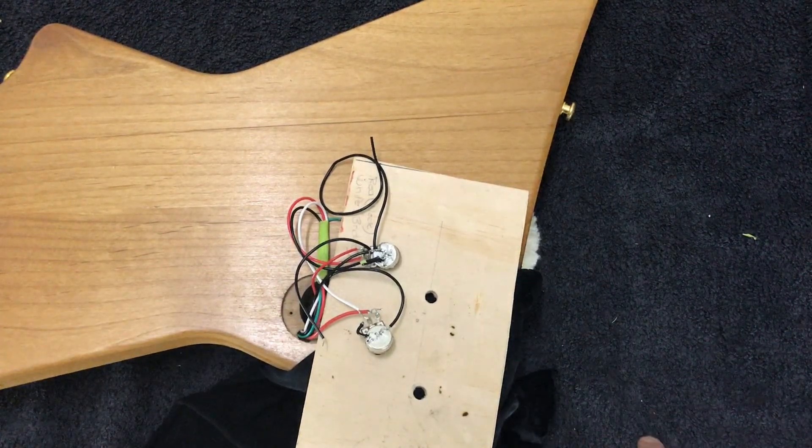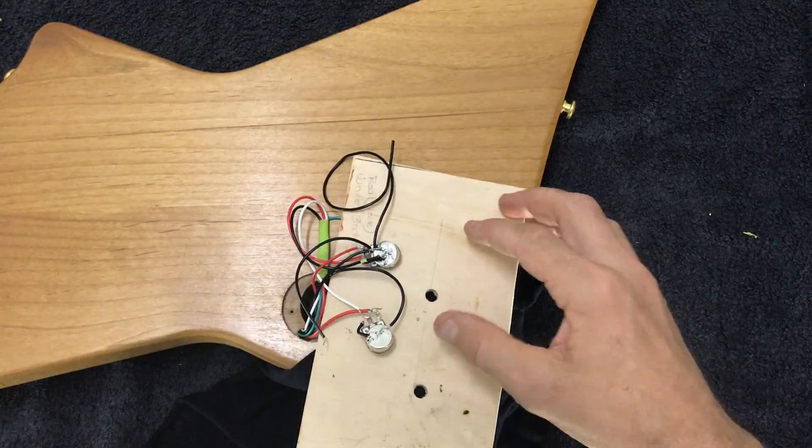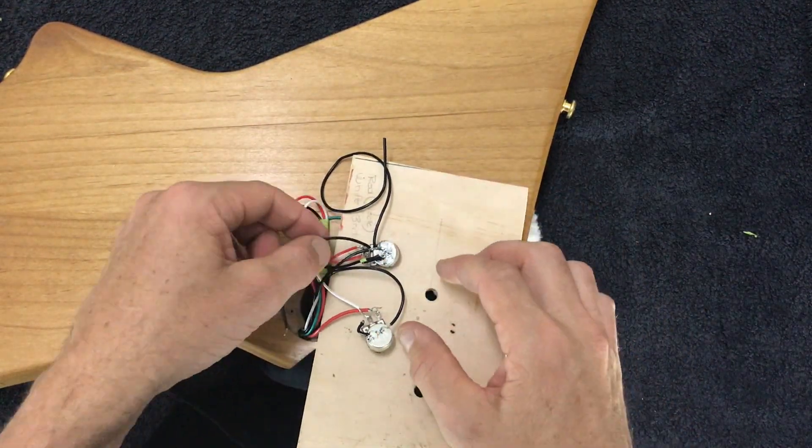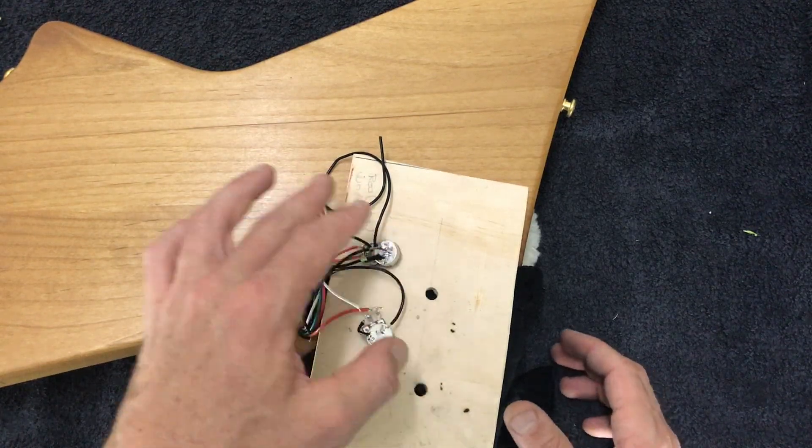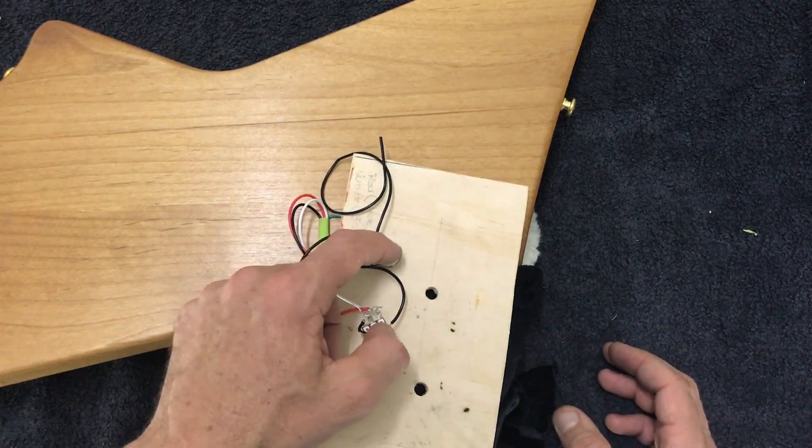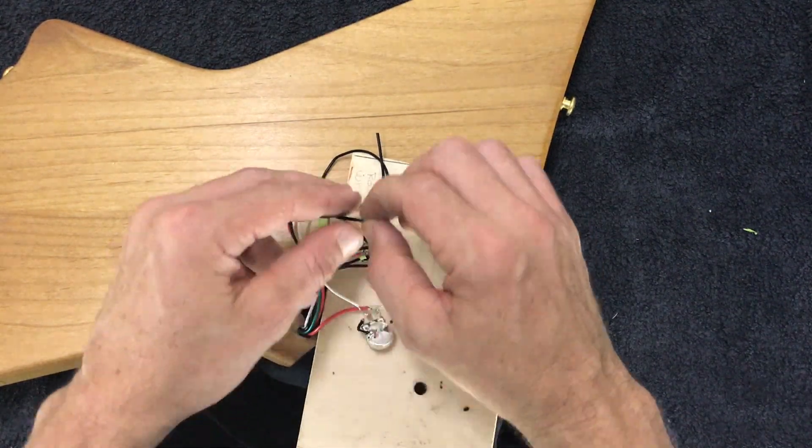Unfortunately the video cut out there, but what I've since done - I've connected the ground wires from both pickups to the back of their respective volume pots. It doesn't matter which, but they're more convenient and more accessible. So I've run the ground from the bridge pickup to the bridge volume.